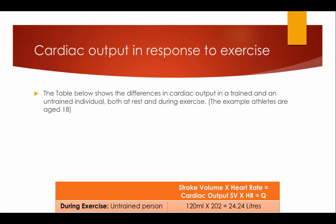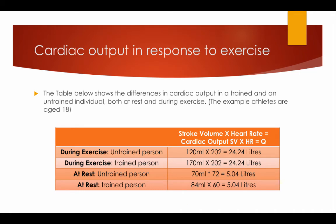The table below shows differences in cardiac output between a trained and an untrained individual, both at rest and during exercise — the example athletes are aged 18. During exercise, an untrained person has a stroke volume of 120 millilitres with a heart rate of 202, giving a cardiac output of 24.24 litres. A trained person during exercise has a stroke volume of 170 millilitres with a heart rate of 202, giving a cardiac output of around 34.34 litres. At rest, an untrained person has 70 millilitres times 72 equals 5.04 litres, compared to a trained person at rest with a stroke volume of 84 millilitres at 60 beats per minute, giving the same 5.04 cardiac output.